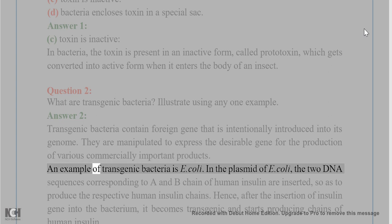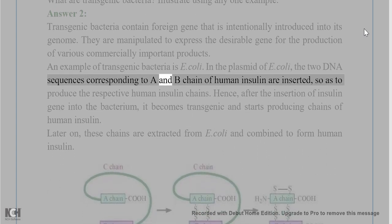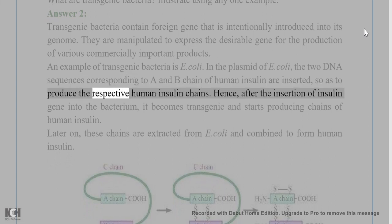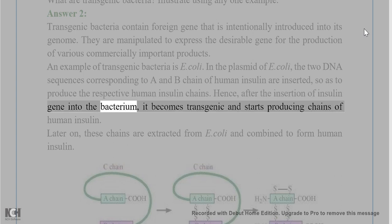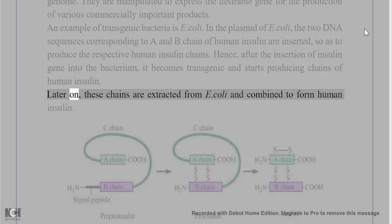An example of transgenic bacteria is E. coli. In the plasmid of E. coli, the two DNA sequences corresponding to A and B chain of human insulin are inserted, so as to produce the respective human insulin chains. Hence, after the insertion of insulin gene into the bacterium, it becomes transgenic and starts producing chains of human insulin. Later on, these chains are extracted from E. coli and combined to form human insulin.